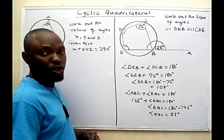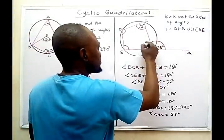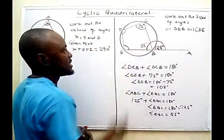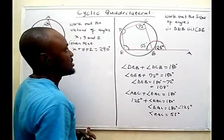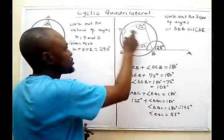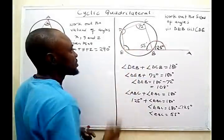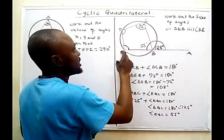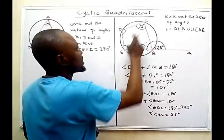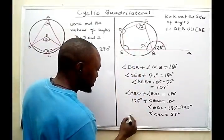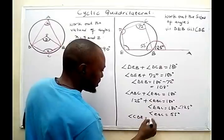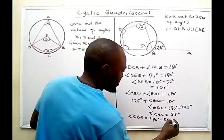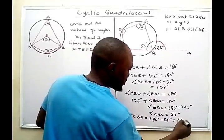Now we are not done yet. That shows that angle EBC is 55 degrees. But we need this angle in order to get angle CDE. Since the sum of opposite angles of a cyclic quadrilateral gives us 180 degrees, angle CDE will be equal to 180 degrees minus 55 degrees, which gives me 125 degrees.